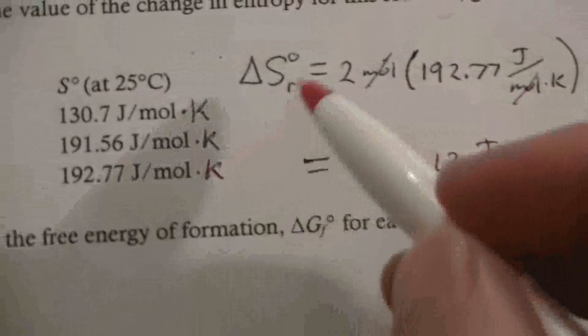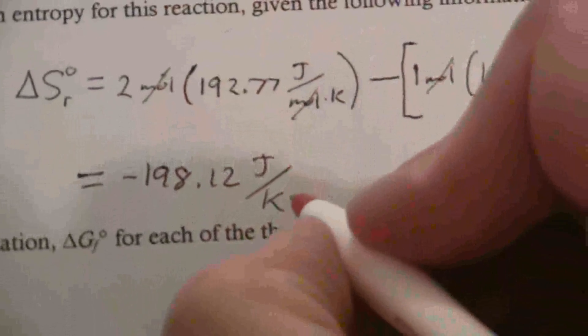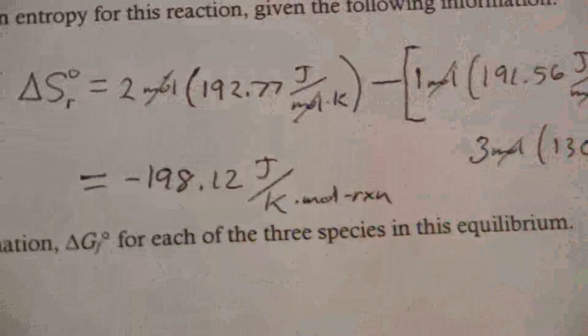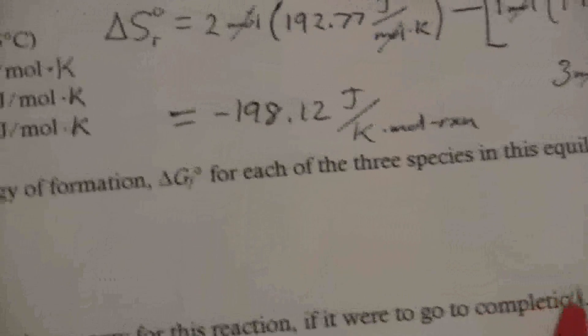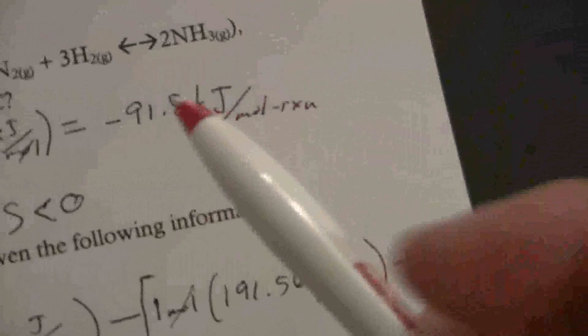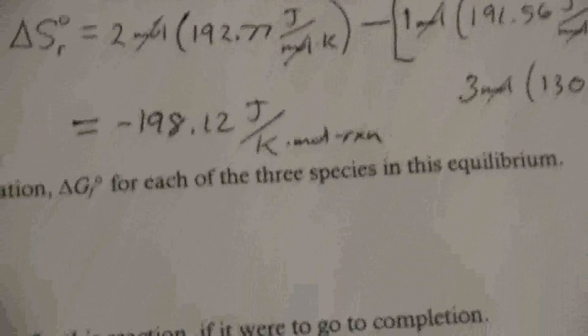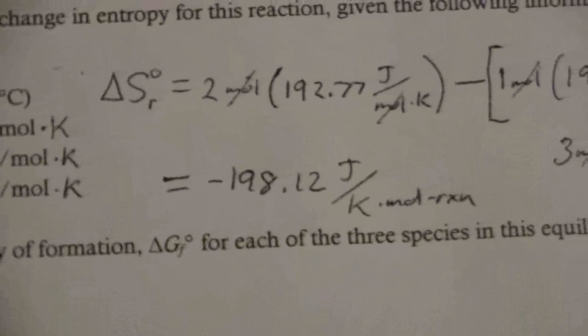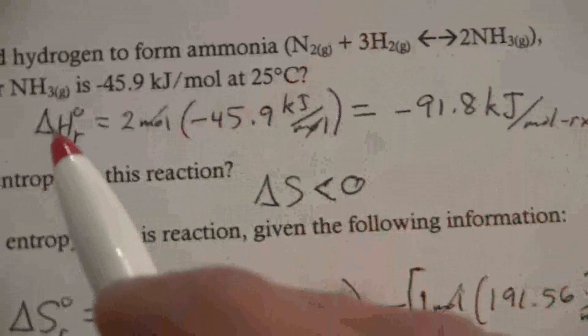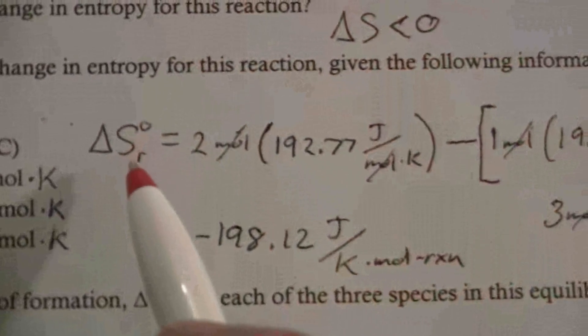And just like before, I could say that's per mole of the reaction, so just tying it back to this specific reaction where I'm producing two moles of ammonia. So now we have the delta H for the reaction and the delta S for the reaction.